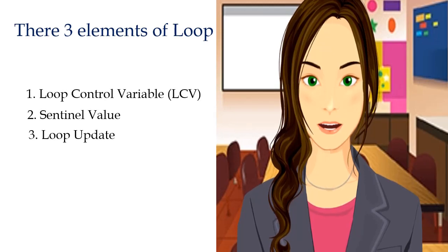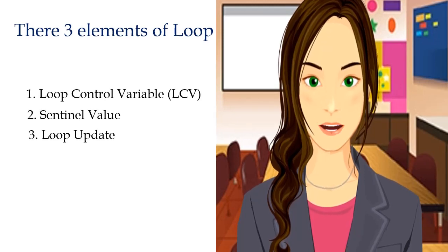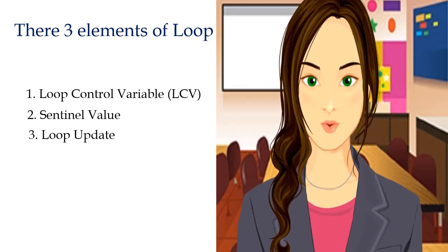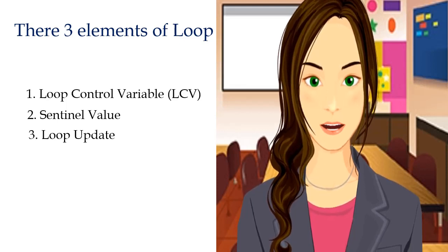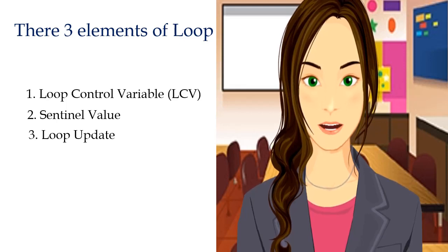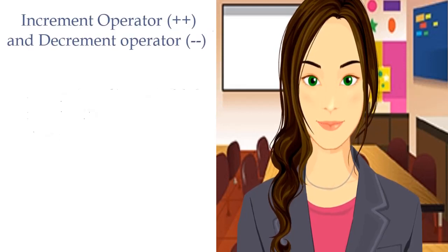The last element is Loop Update. Inside the loop, the value of the Loop Control Variable must be altered — it is called the Loop Update. You can change the value by incrementing, which means adding one to a variable, or decrementing, which means subtracting one from a variable.